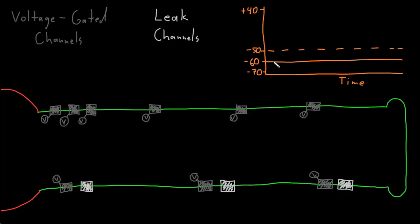The importance of this threshold potential is that it determines if these voltage-gated ion channels will open. When there is enough temporal and spatial summation of excitatory graded potentials to get us toward the threshold here at the trigger zone, at the initial segment of the axon, those excitatory potentials spread across the membrane of the soma into the initial segment — the trigger zone.